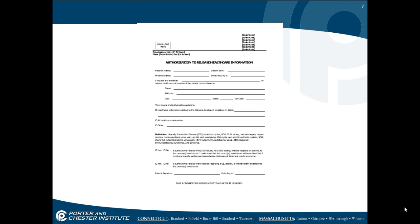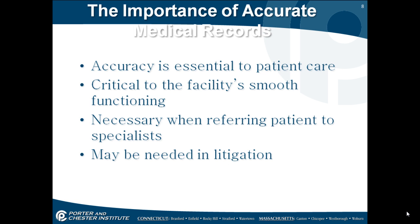This is a sample of an authorization to release information healthcare form. The importance of accurate medical records: accuracy is essential to patient care and critical to the facility's smooth functioning. It's necessary when referring patients to specialists, and records may be needed in litigation. Maintaining a conscientious record of patient care is absolutely essential in controlling the cost of medical care.